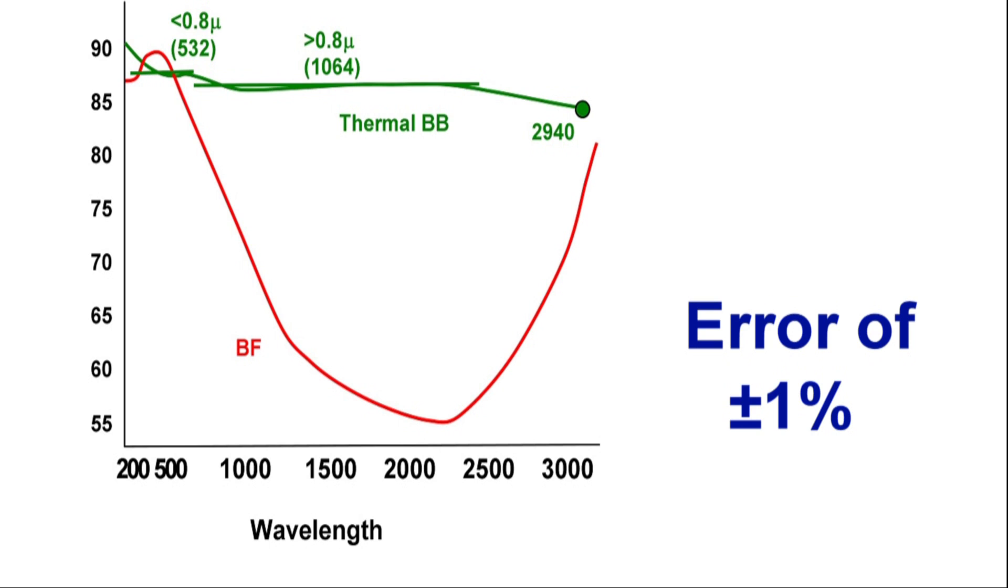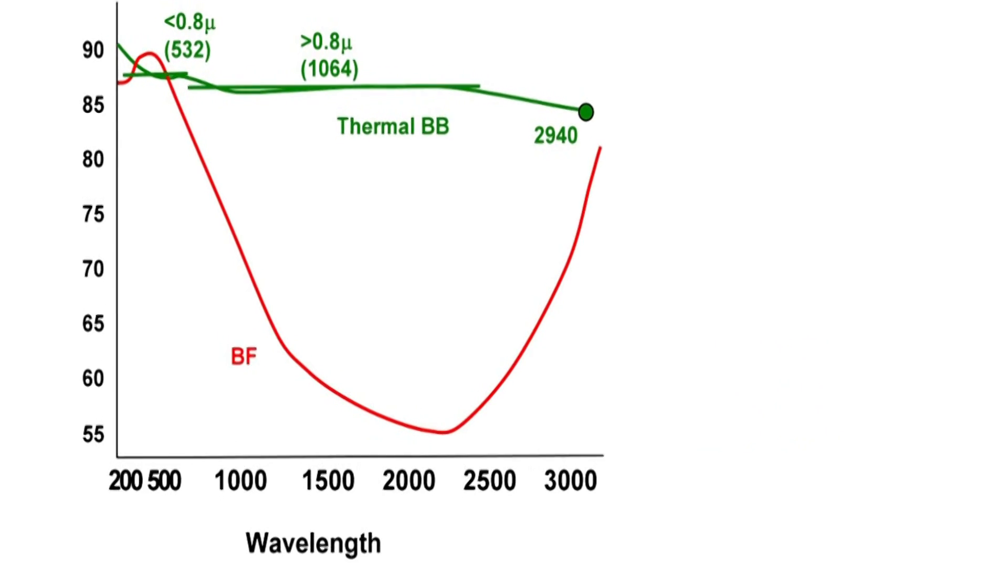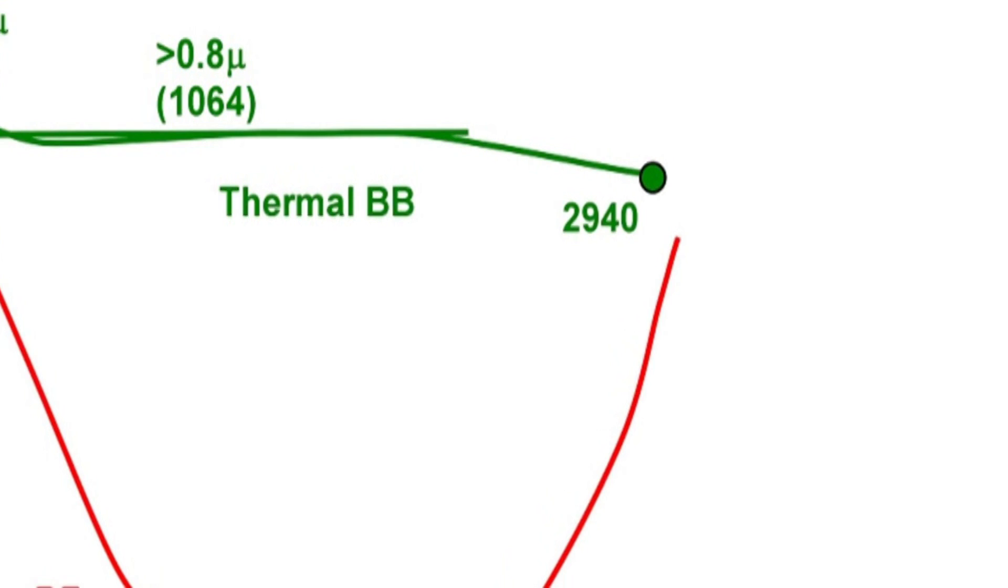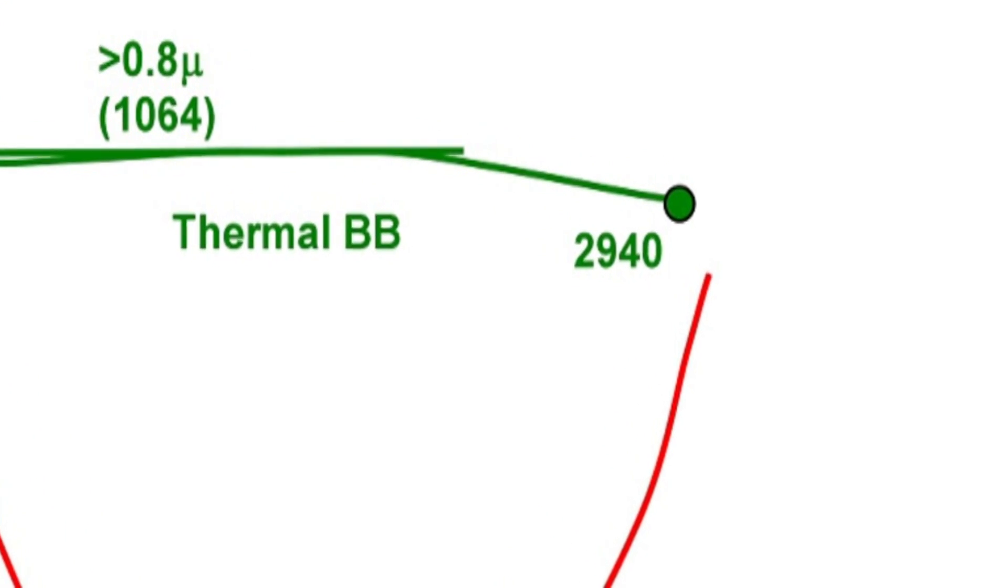The same thing goes if he chooses the near infrared region. And sometimes we define a particular point for a particular laser outside of that region. That's the 2940 wavelength.